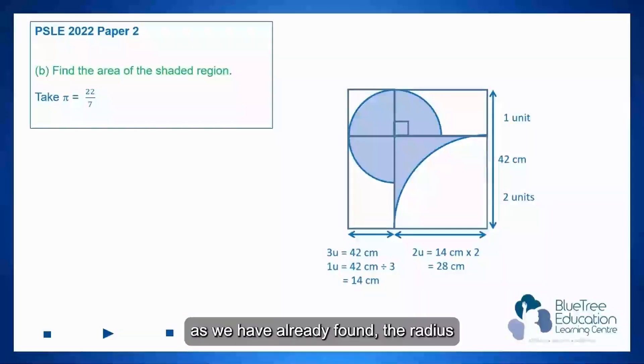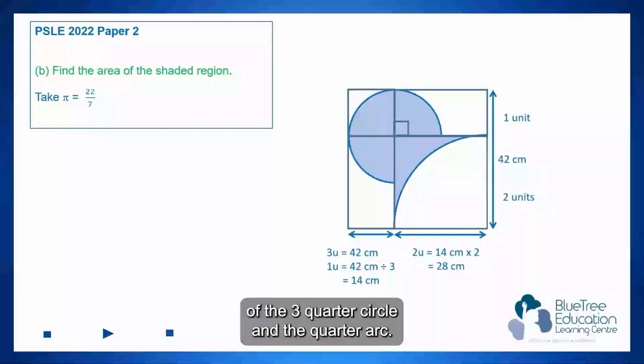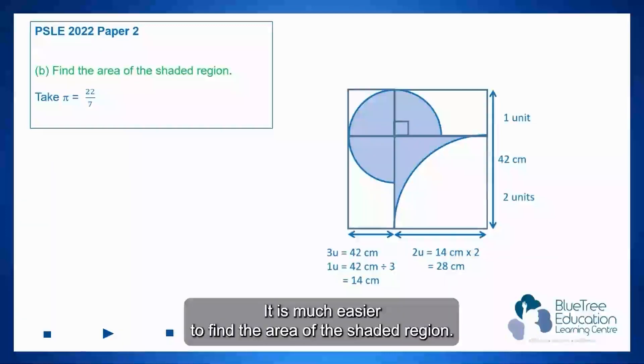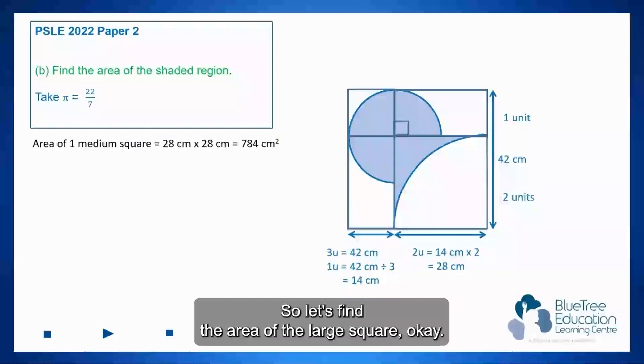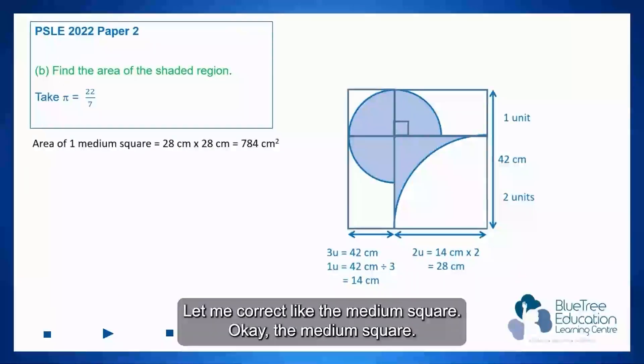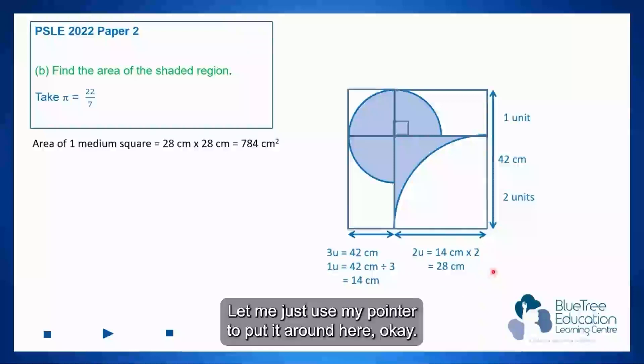As we have already found the radius of the three-quarter circle and the quarter arc, it is much easier to find the area of the shaded region. So let's find the area of the medium square, let me just use my pointer to put it around here.